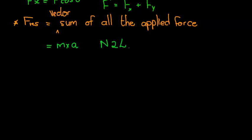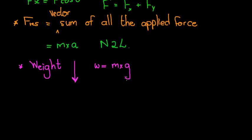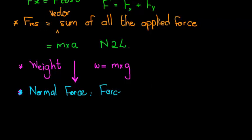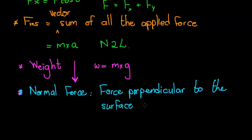We also learned about weight. One thing about weight is that it's always vertically downward, and we calculate weight by taking the mass of the object multiplied by gravitational acceleration. We also learned about a special force called the normal force, or perpendicular force — it is the force perpendicular to the surface, applied by the surface to an object.